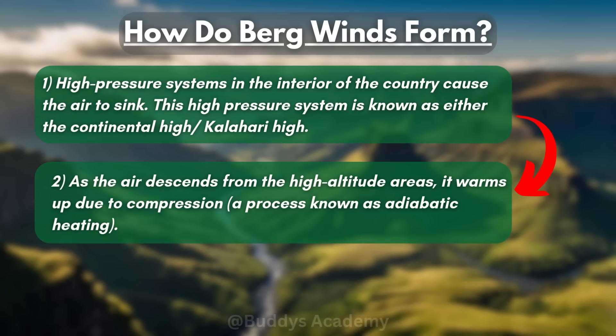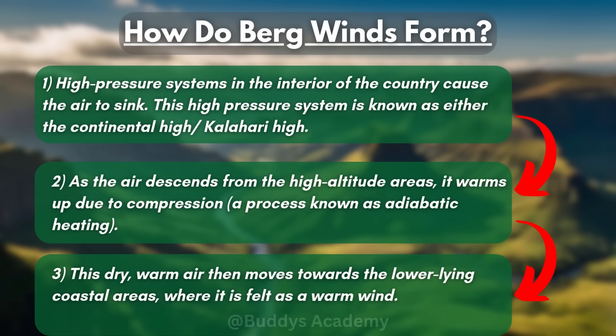This process is known as adiabatic heating. Our third point states that this dry, warm air then moves towards the lower lying coastal areas where it is felt as a warm wind. In its most basic form, there are only three major steps: first, the Kalahari High causes the air to sink; then, as the air descends, adiabatic heating takes place — the warming up of air as it compresses; and finally, the warm air moves towards the coastal areas where it will be felt as a Bergwind.